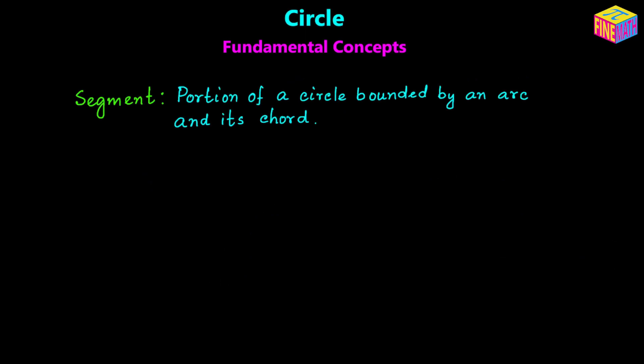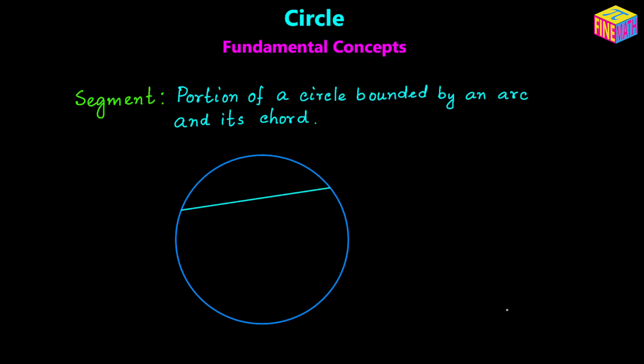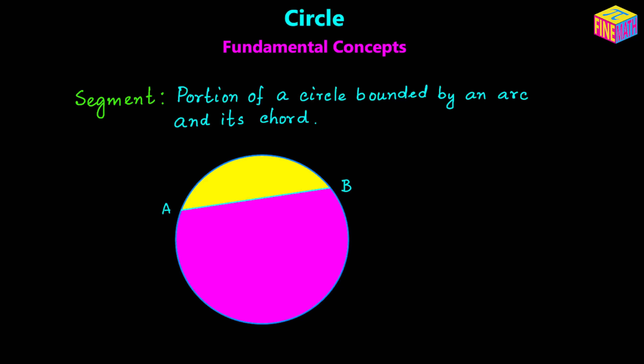Next we are going to learn another concept called segment. A segment is a portion of a circle bounded by an arc and its chord. Suppose we have a circle with a chord AB — there are two sides to this chord, a smaller portion and a larger portion of the circle, each called a segment. The yellow shaded portion between the chord and the minor arc is called the minor segment. The remaining portion — the pink shaded area between the chord and the major arc — is called the major segment.